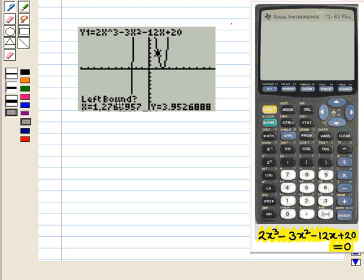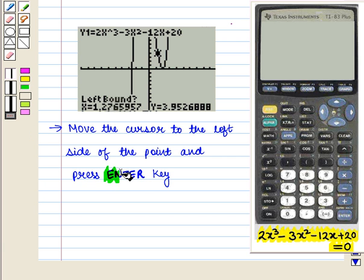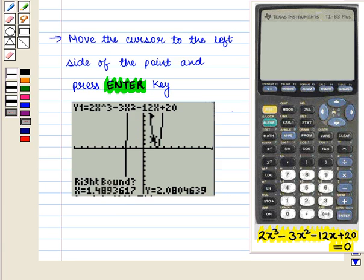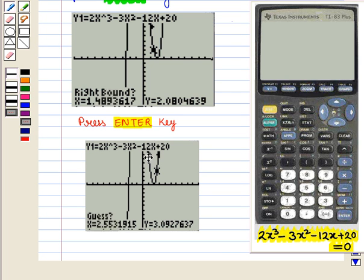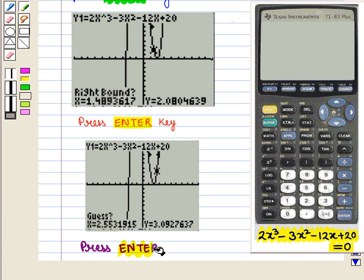Now it is asking for left bound. So we first move the cursor to the left side of the point and then press ENTER key. The anchor will appear and now it is asking for right bound. So we move up from this point and press ENTER key. Now both anchors appear and it asks for guess. So we press ENTER.